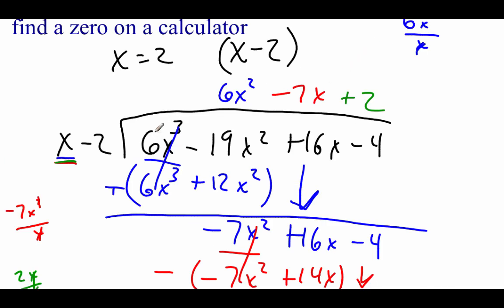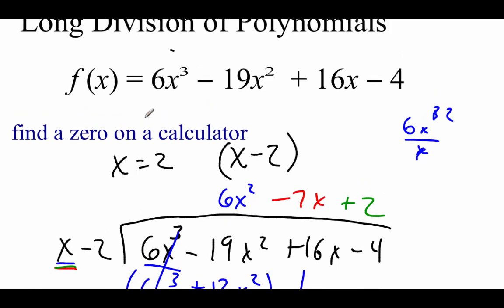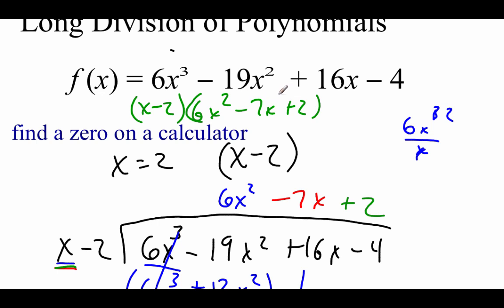So here's what all this is saying. If we take the original polynomial 6x cubed minus 19x squared plus 16x minus 4 and divide out x minus 2, we're left with 6x squared minus 7x plus 2. Since both of these are factors, we could write it as x minus 2 times 6x squared minus 7x plus 2. If we were trying to solve this, it's much easier now — we've got a linear function we can set equal to 0, and a quadratic we can factor or run through the quadratic formula.